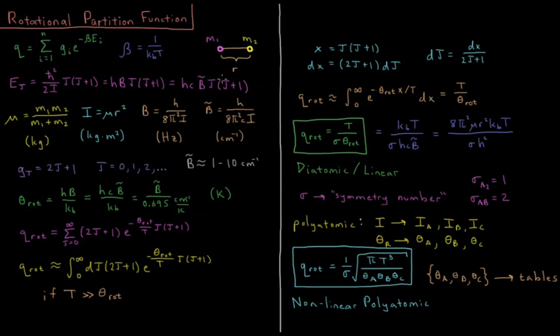Each of these energy levels has a degeneracy that is 2j plus 1. So the ground state is singly degenerate, the first state is triply degenerate, five-fold, seven, nine, eleven, et cetera, as you go up.